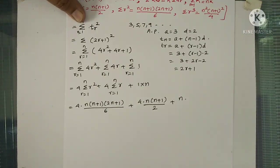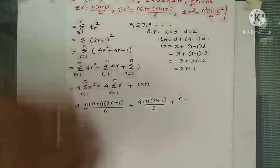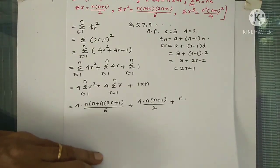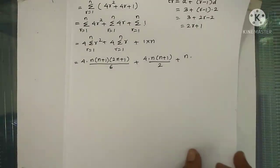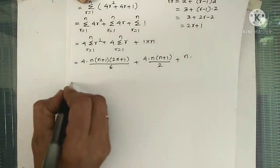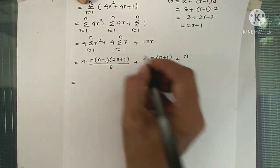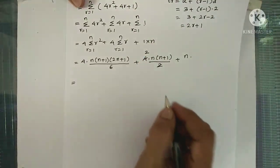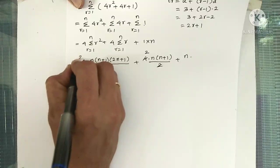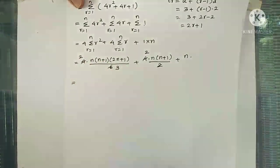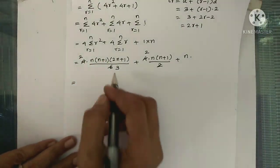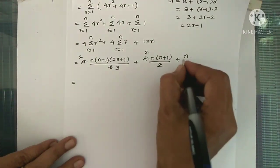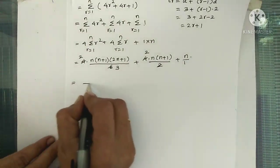Substituting the formulas: 4 times n(n+1)(2n+1)/6, plus 4 times n(n+1)/2, plus n. Dividing: 4 by 6 gives 2/3, and 4 by 2 gives 2. So we have 2n(n+1)(2n+1)/3 plus 2n(n+1) plus n. Now take LCM of the denominators 3, 1, and 1, which is 3.